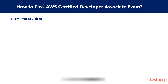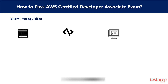Exam Prerequisites for the AWS Developer Associate Exam. First, it is necessary to have more than one year of hands-on experience in maintaining and developing AWS-based applications. Second, you should have proficiency in at least one advanced-level programming language with knowledge in AWS core services. Third, you should know how to write code for serverless applications and how to use AWS service APIs, SDKs, and AWS CLI to write applications.